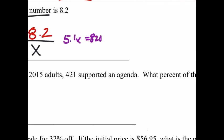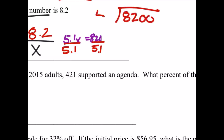So what does that give us? Why don't we divide by 5.1? So we can make that 8200 divided by 51.